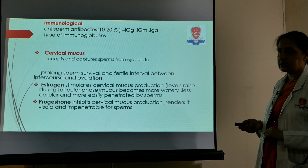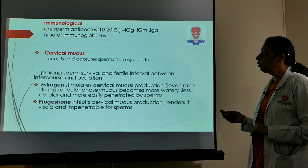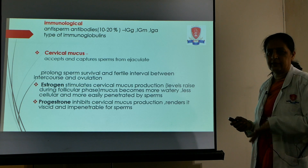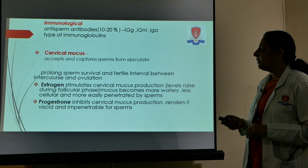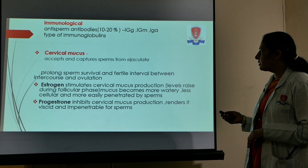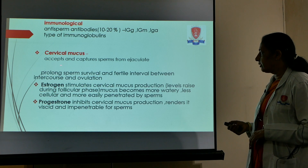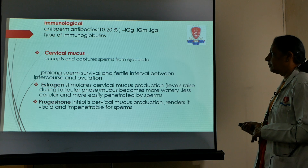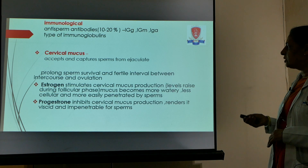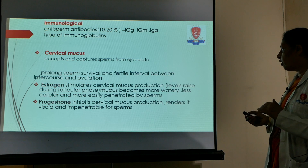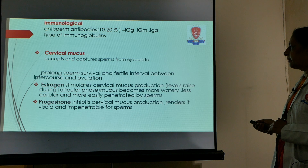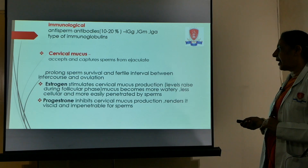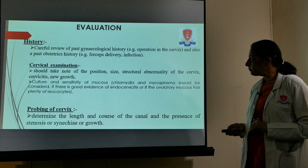There can be immunological causes in the cervix such as anti-sperm antibodies in 10 to 20 percent of cases, including IgG, IgM, or IgA type immunoglobulins, which kill the sperm as soon as it enters. Normally, cervical mucus captures the sperm from the ejaculate and prolongs sperm survival and the fertile interval between intercourse and ovulation. Estrogen stimulates cervical mucus production, making it more watery, less cellular, and more easily penetrable by sperms, whereas progesterone inhibits mucus production and renders it viscid and impenetrable.